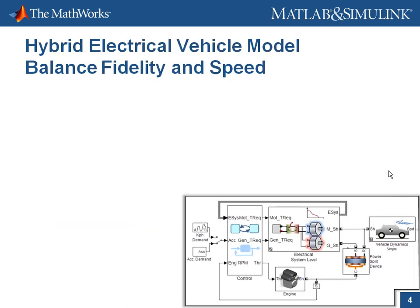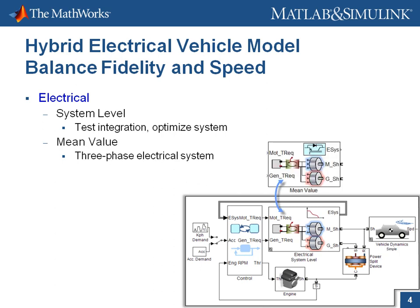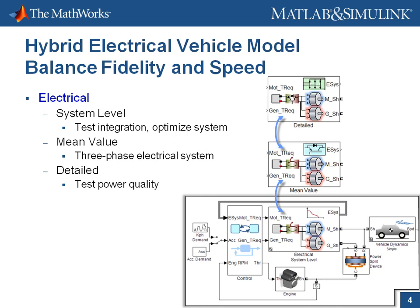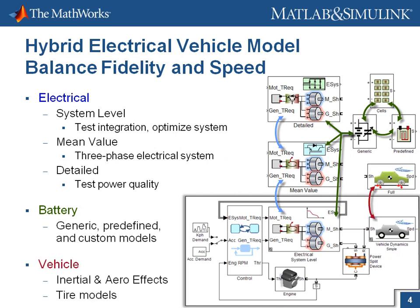The model has many options for balancing model fidelity and simulation speed. The electrical model has a system-level variant for integration testing and system optimization, a mean value variant for three-phase electrical system tests, and a detailed variant with power electronics for testing power quality on different electrical networks. For the battery model, we have generic, predefined, and custom model options. The vehicle model has two variants: one with inertial and aerodynamic effects that simulates quickly, and another with tire models and additional dynamics. These options make us flexible in the development process.